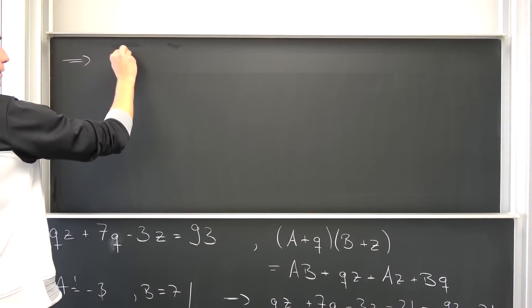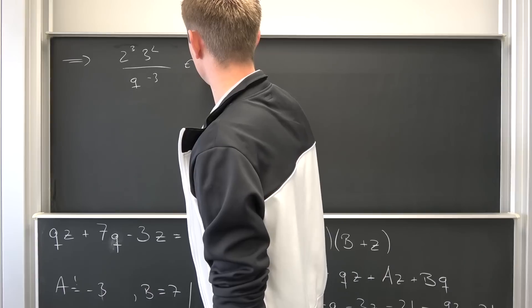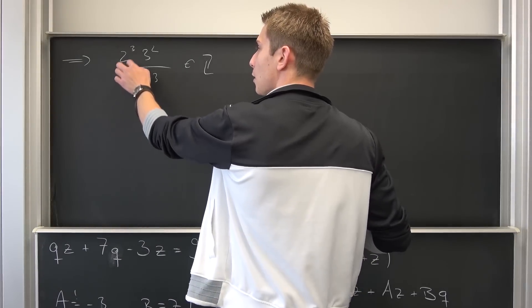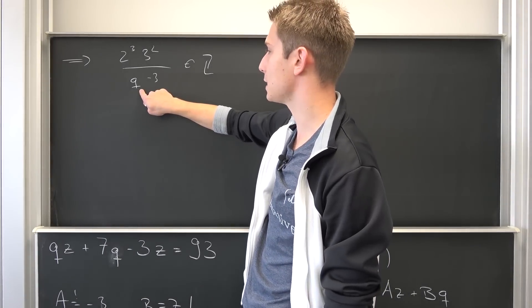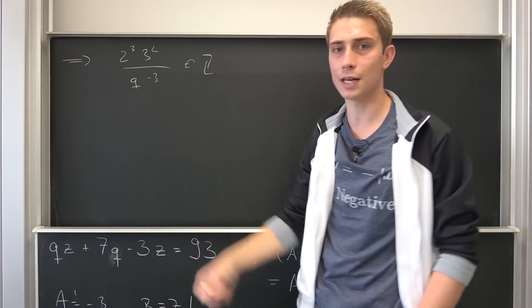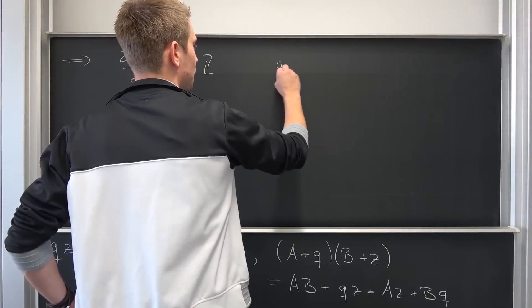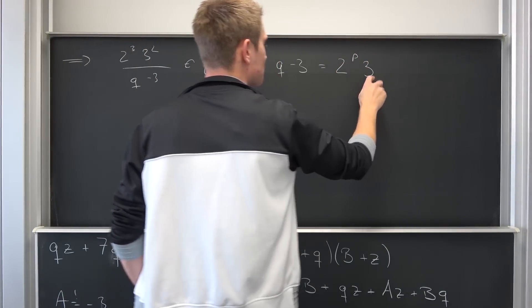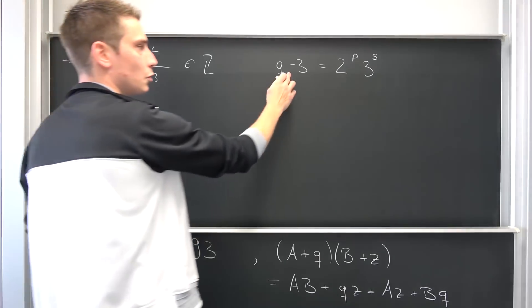Now we know that 2³ times 3² over (q - 3) must be element of Z yet again. That's just the same argument right here. Meaning we need to find out q such that factors up here cancel out. I hope this does make sense to you how this works. For example, one example would be that our q is nothing other than 0, for example, because then we would have negative 3 and the 3 and the 3 would cancel out right here. Now we're going to find all the solutions right here. Meaning (q - 3) must be equal to any combination of those up here, so 2^p times 3^s for example. It can be equal to any of those situations that we have right here.